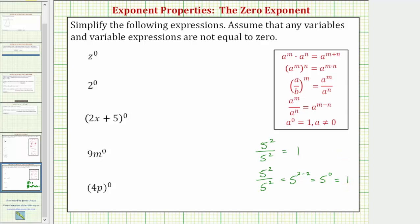Now let's look at our examples. First we have z to the zero, and again we're told the variables and variable expressions are not equal to zero, and therefore we know this must equal one. Two to the zero also equals one.